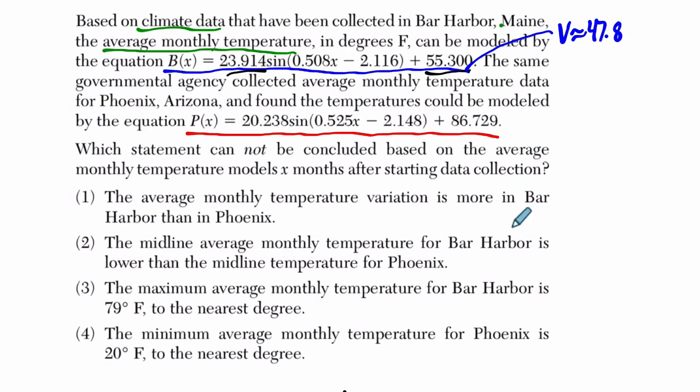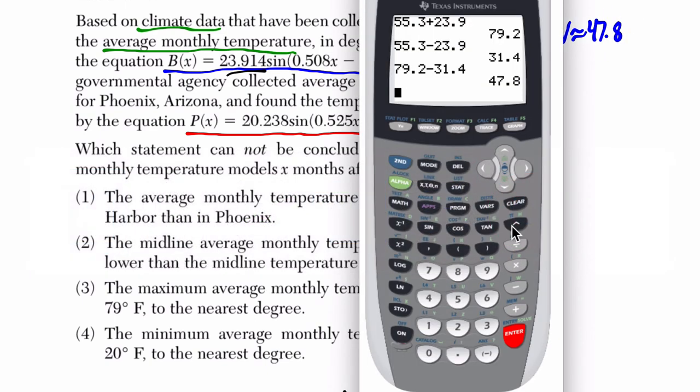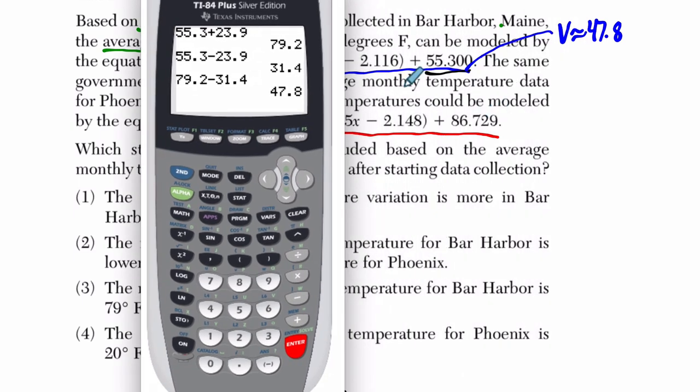So let's repeat the process for the Phoenix numbers. So here for Phoenix, where's our midline? It's 86.7. I'm just rounding, hoping that this will be more than enough.